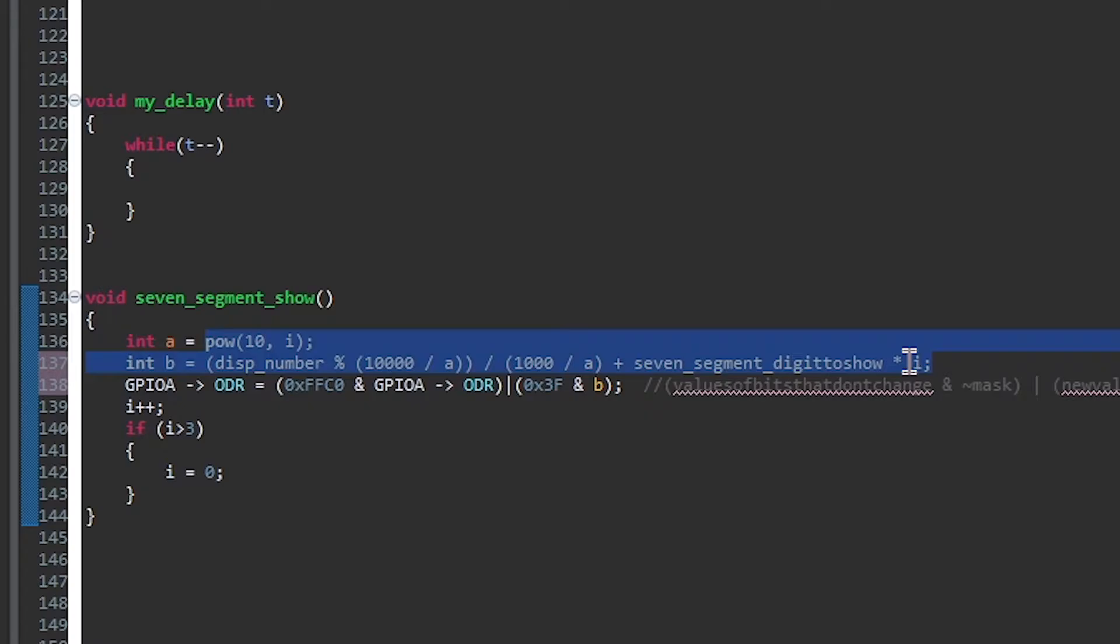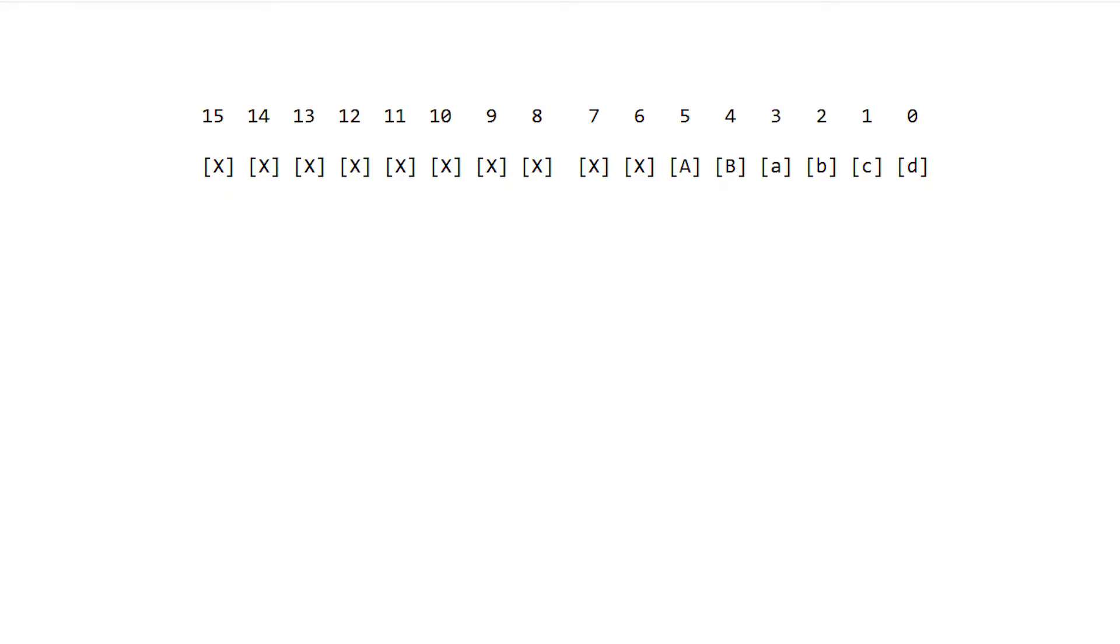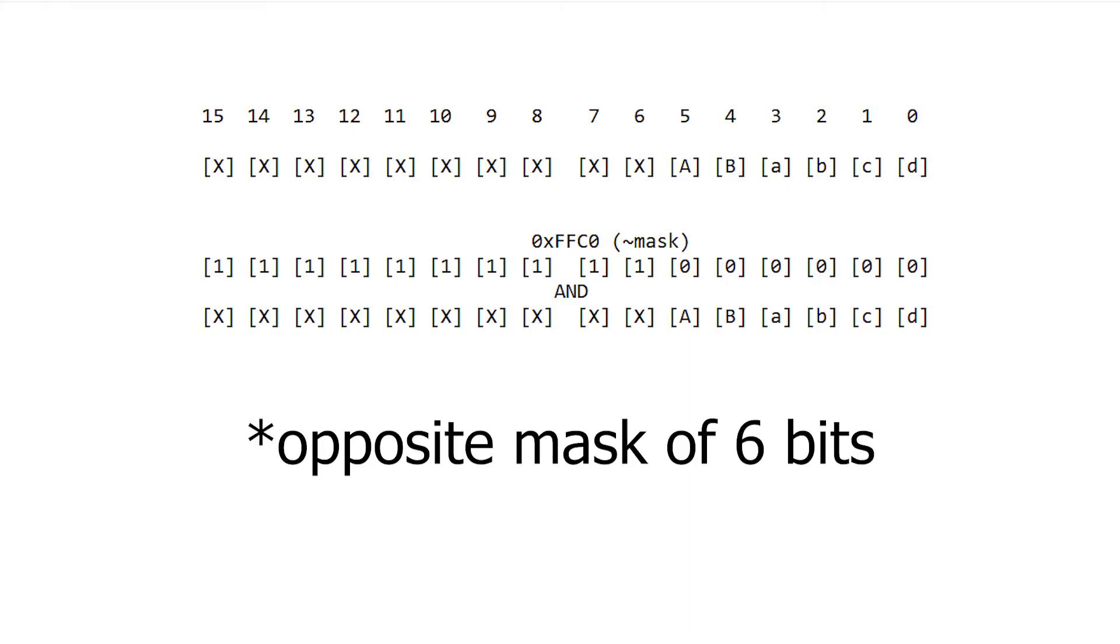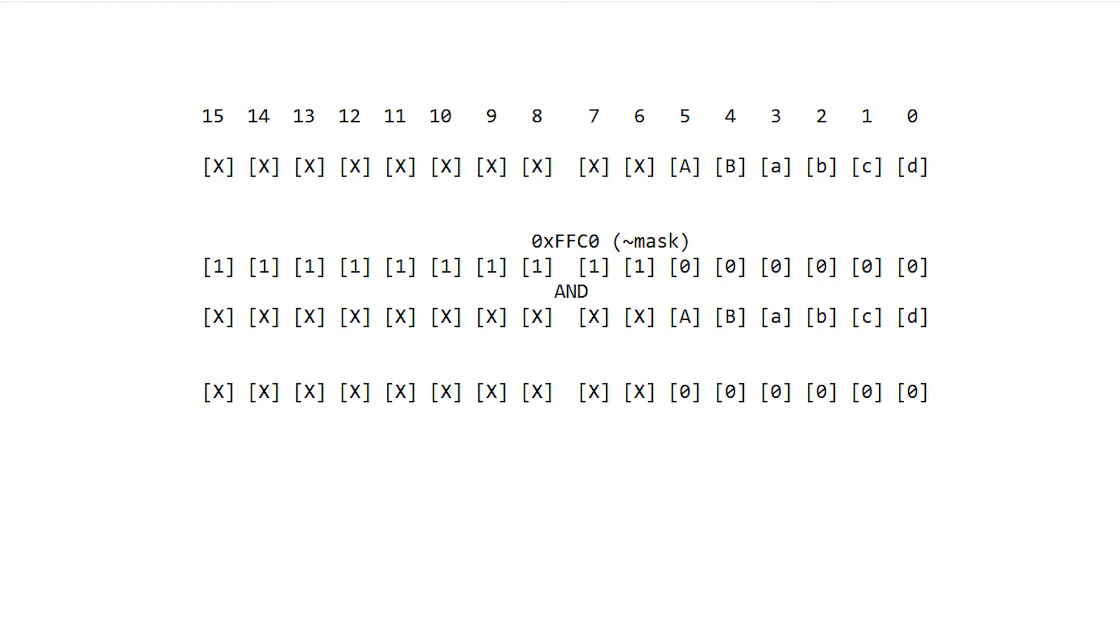Let's see what is exactly happening here. As I said, bits from 6 to 15 may contain some important information in the future. They are displayed as X. Capital A and B plus A, B, C and D contain information for our display. And these 6 bits are the only ones we want to change. What we do first, we take the opposite of the first 6 bits and use AND operator with port A. And the result is, the first 6 bits are 0, the rest is untouched.